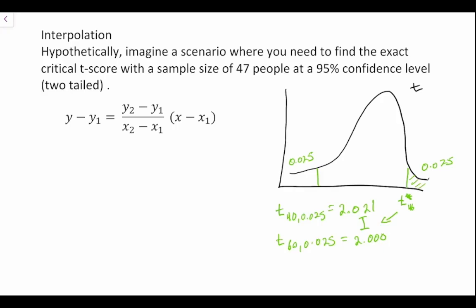So here's our calculation for our interpolation: y minus y1 is equal to (y2 minus y1) divided by (x2 minus x1) times (x minus x1). We'll just let our y's equal our t-scores and our x equal our degrees of freedom.